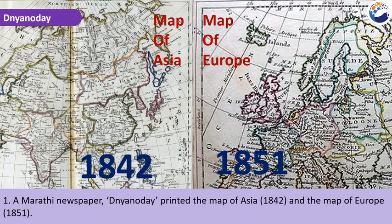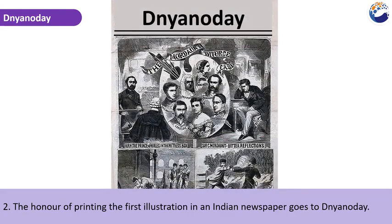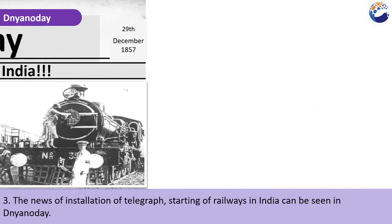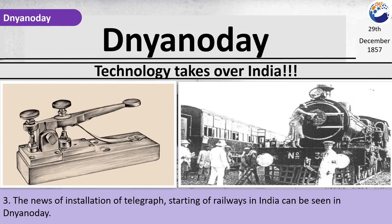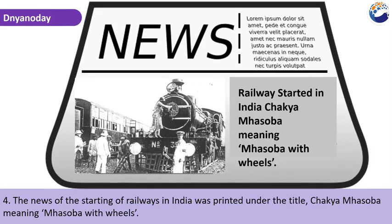A Marathi newspaper, Nyanodai, printed the map of Asia in 1842 and the map of Europe in 1851. The honour of printing the first illustration in an Indian newspaper goes to Nyanodai. News of the installation of telegraph and the starting of railways in India can be seen in Nyanodai. The news of railways was printed under the title 'Chakya Mahasoba,' meaning Mahasoba with wheels.